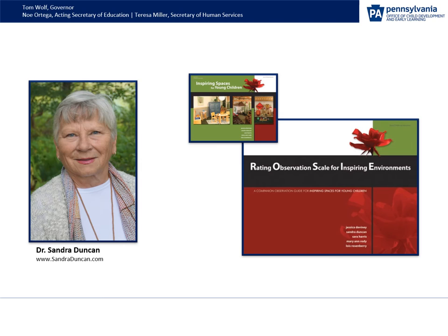Inspiring Spaces and Rating Observation Scale, or ROSE, created quite a stir because in 2010, there was no one in our field putting together the two words: inspiring and classroom. Up to this point, we all thought about classroom design in terms of functionality — like put the art easel next to a source of water, or put the block area in an off-the-beaten path so children's constructions would not get knocked over or disturbed. Yes, the two words — inspiring and classroom — back then, were rarely put together. These words, beauty and classroom environments, were not at the top of educators' minds.